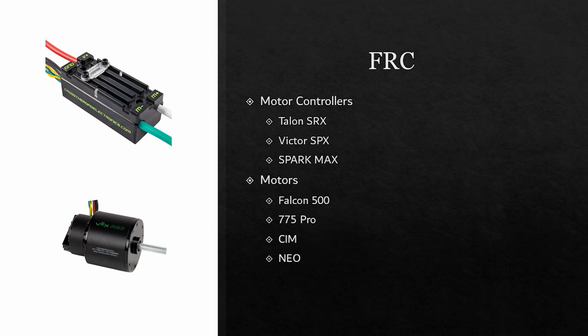We then have motors for FRC. Common motors include the Falcon 500, which are the newest motors, the 775 Pro, the CIM, and the Neos. FRC 1369 uses only the Falcon 500 and the 775 Pro because they offer the best capabilities for our robots.